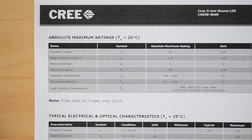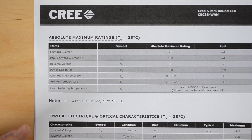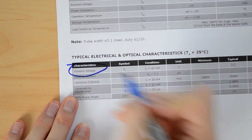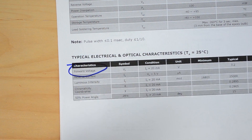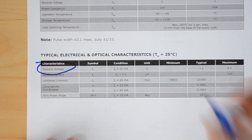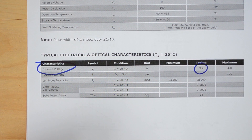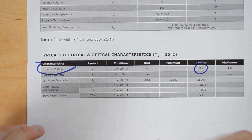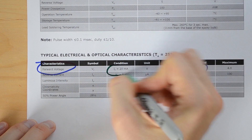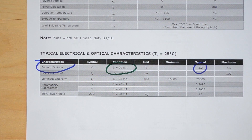The LEDs I'm using for my project are white LEDs. Two things that you want to look for: forward voltage, which for this particular LED is 3.2 volts. The next thing you want to look at is the current associated with that forward voltage — the forward current — and it is 20 milliamps.